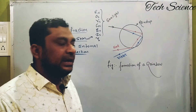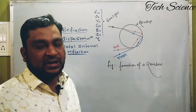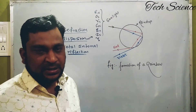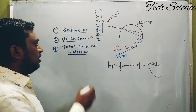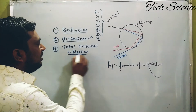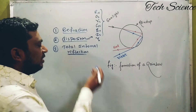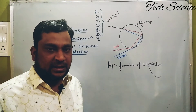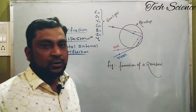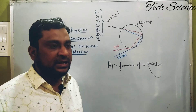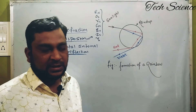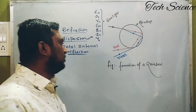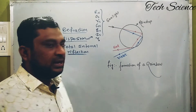Reflection is the bouncing back of a light ray after striking on any object. For the conditions of total internal reflection and what is the critical angle, I have already covered that in the previous video, the link of which is given in the description.